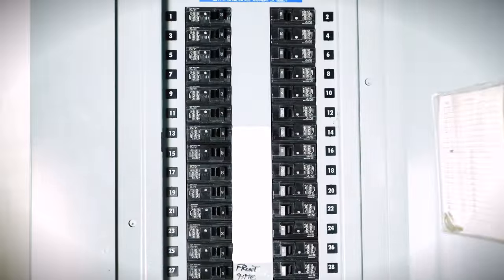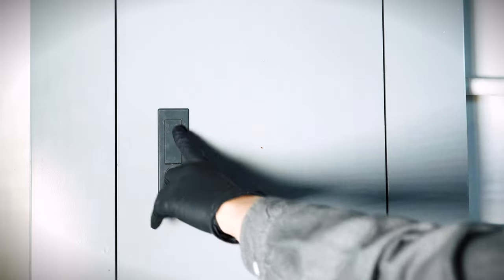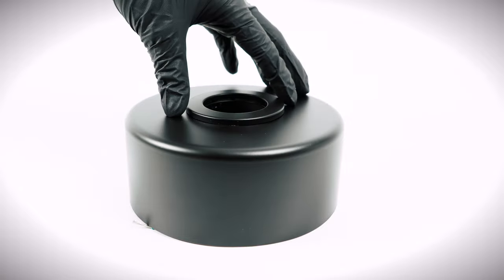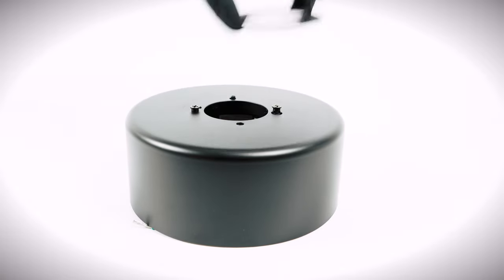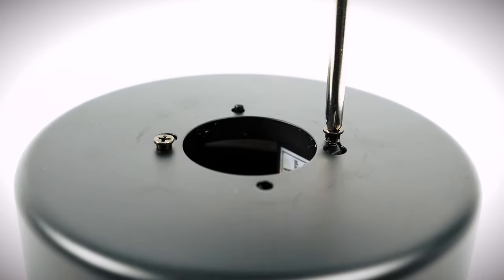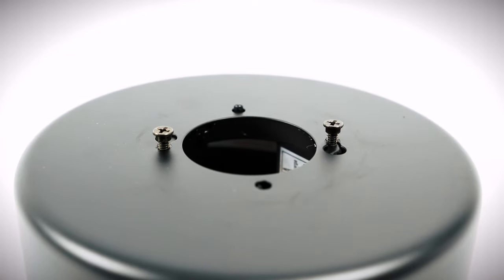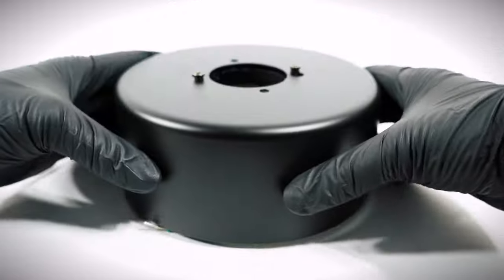Begin by turning power off at the breaker. Prepare the canopy assembly by twisting and removing the canopy bottom cover. Loosen both mounting bracket screws. Twist and lift the canopy to remove the mounting bracket.